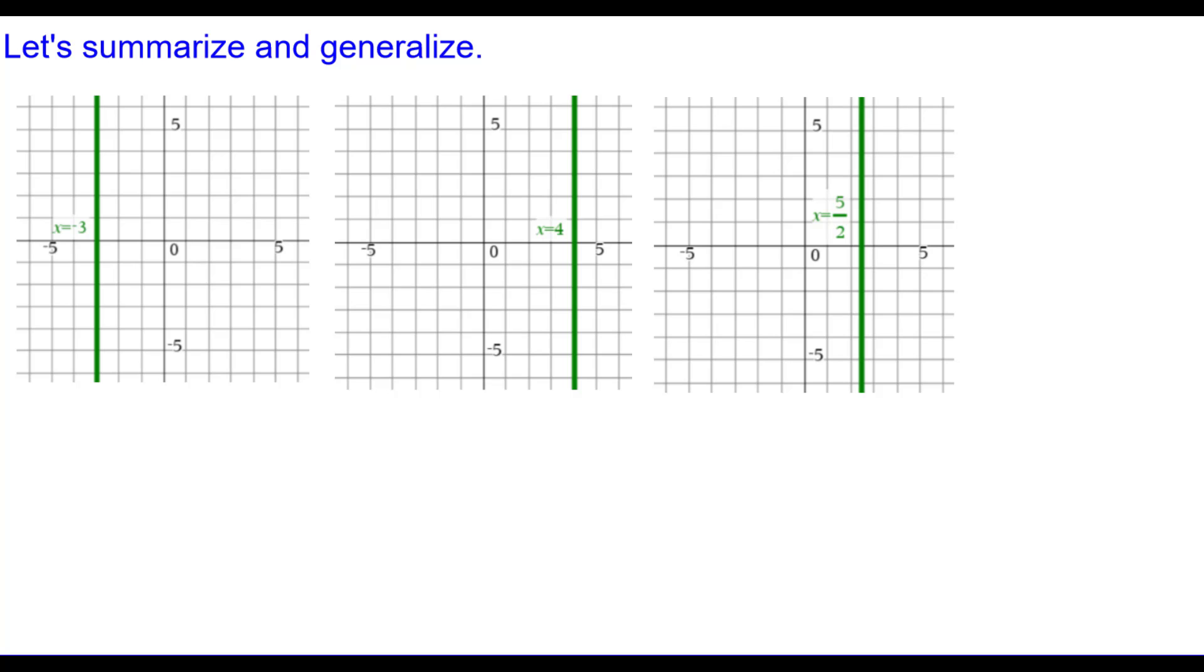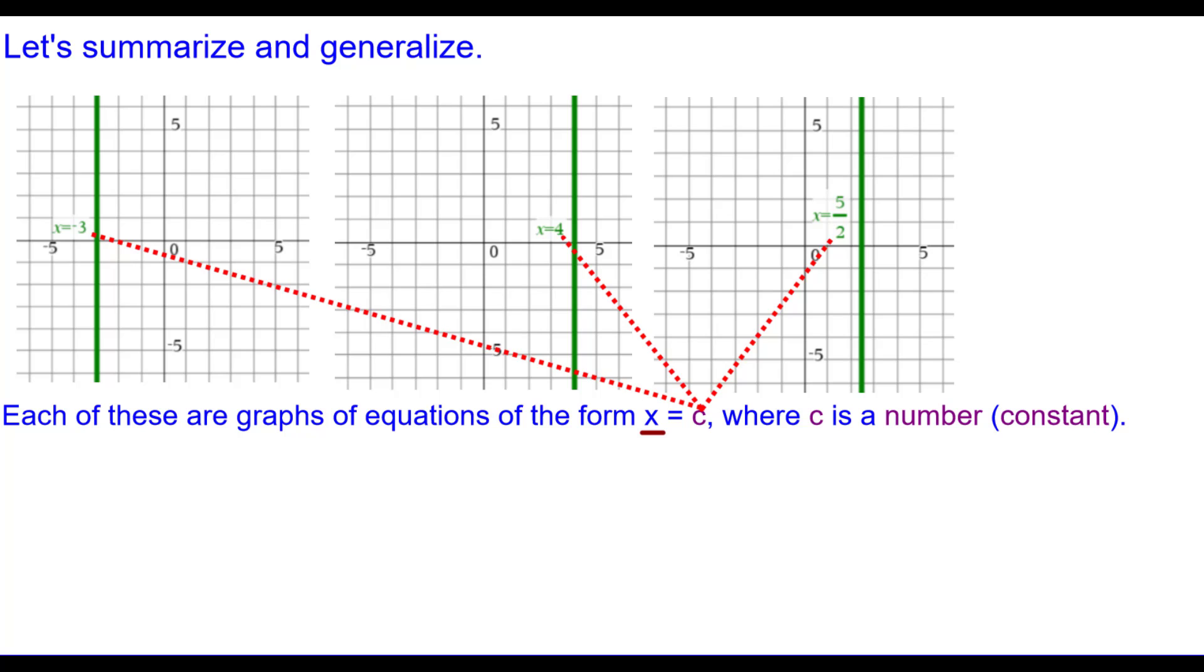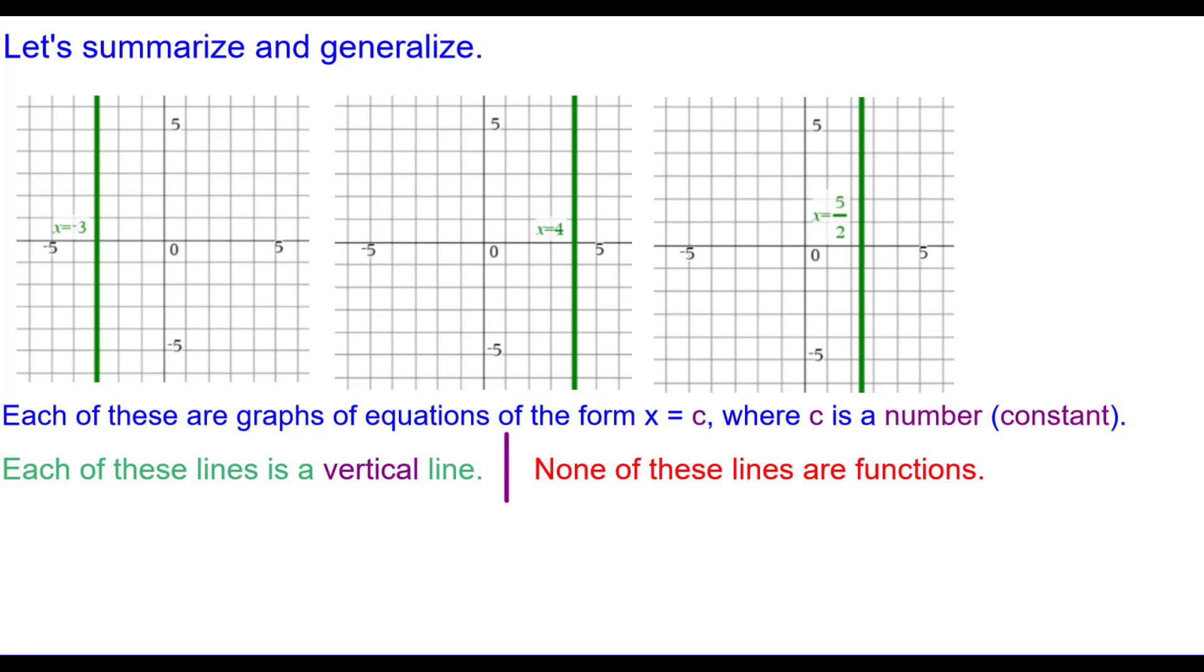So let's summarize and generalize our findings here. Each of these graphs of equations are of the form x equals a constant. Each of these lines is a vertical line. None of these lines are functions. Recall that vertical lines have no slope or we say that the slope of a vertical line is undefined.